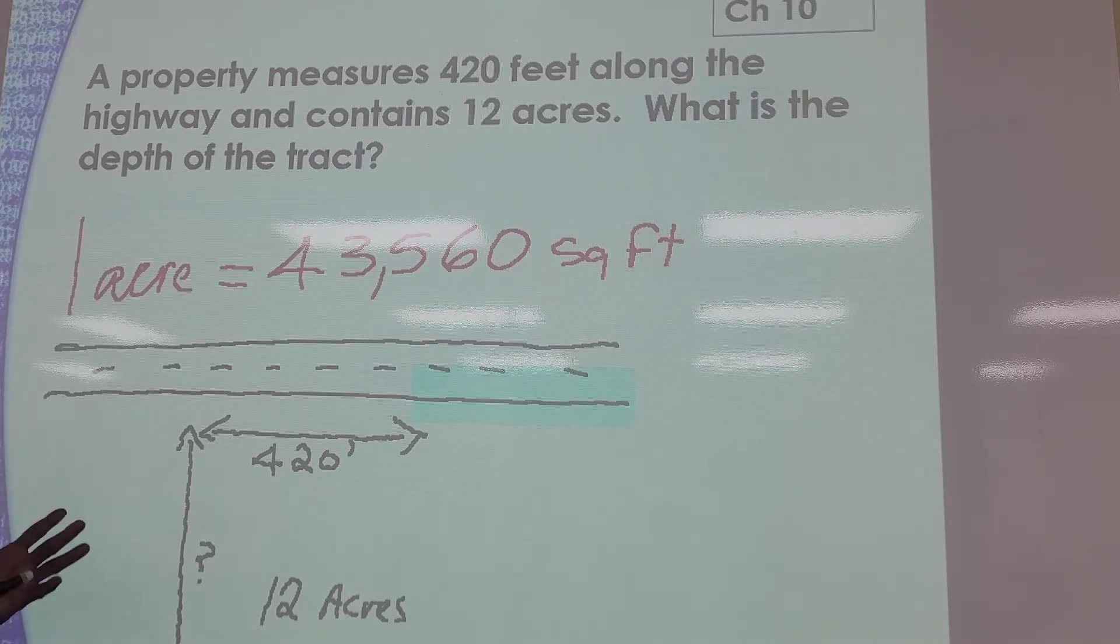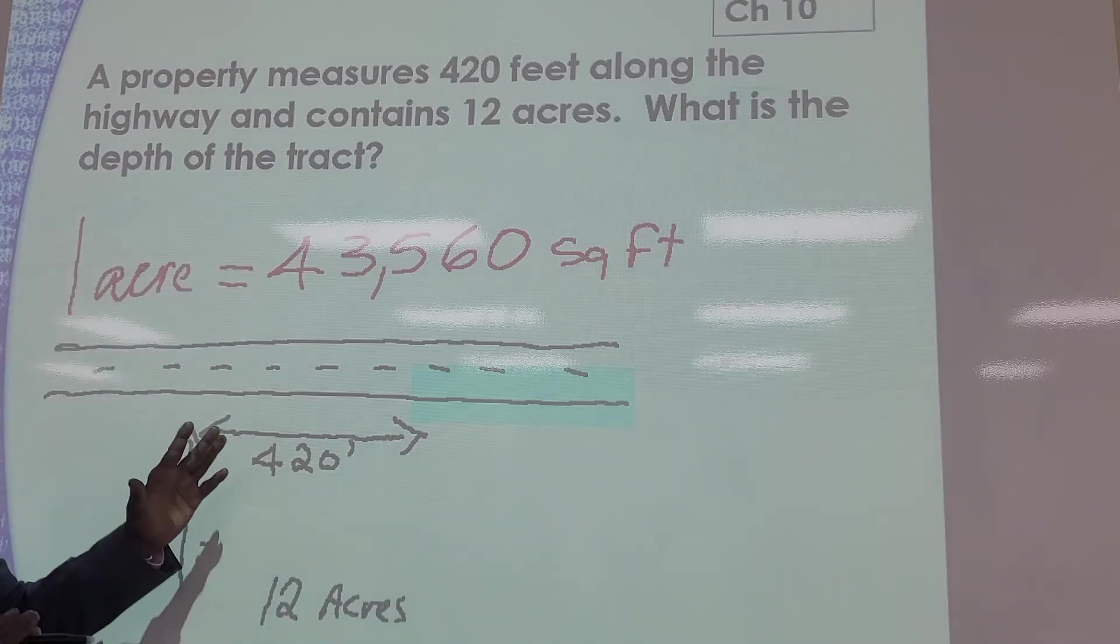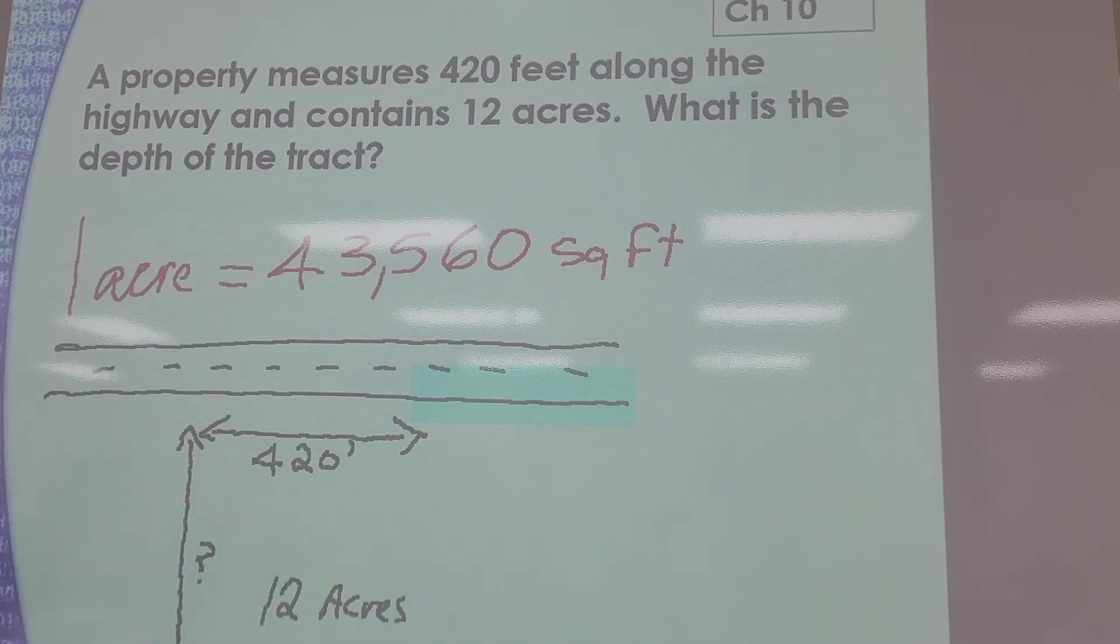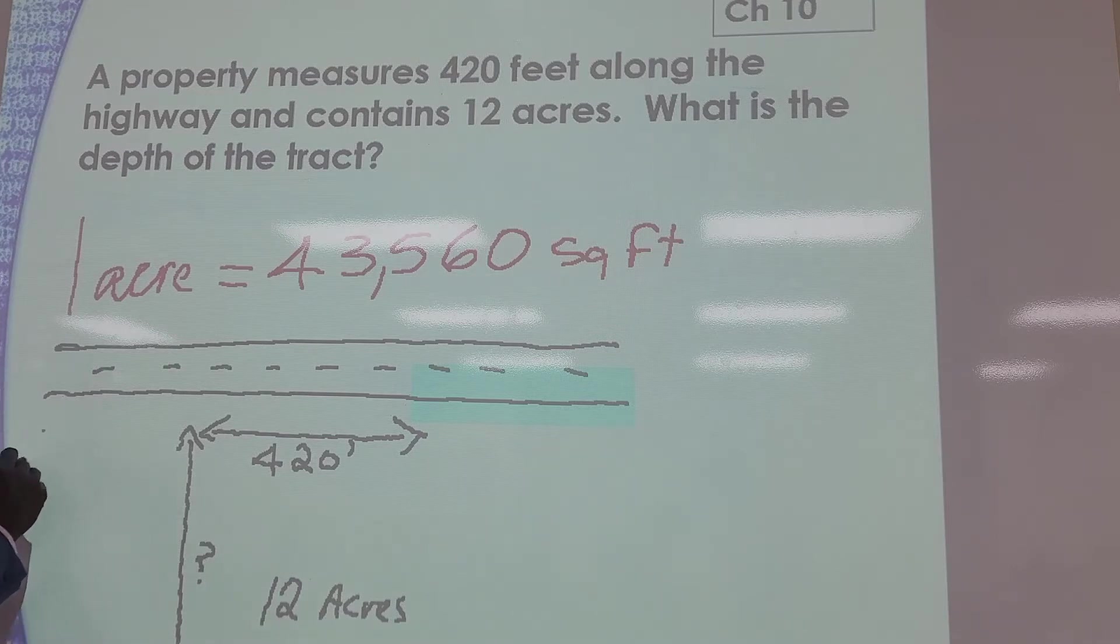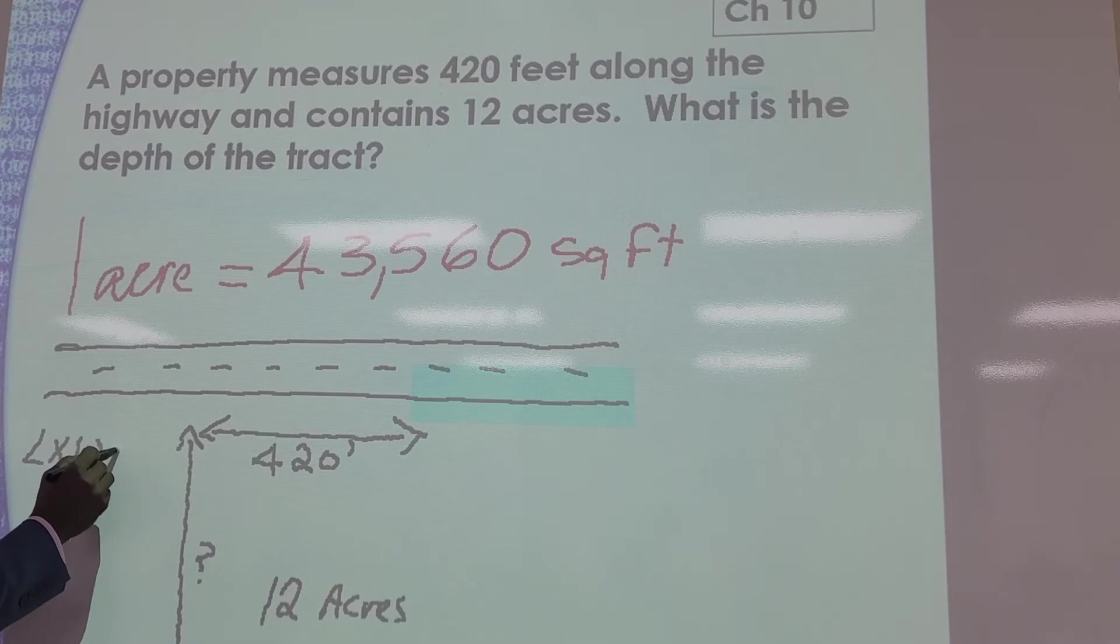And we all understand, to find area, it's length times width. Does that make sense? Remember that simple formula? Length times width equals area.